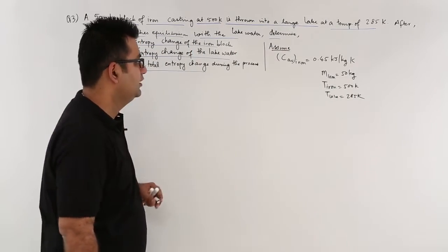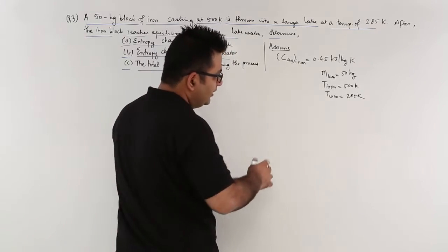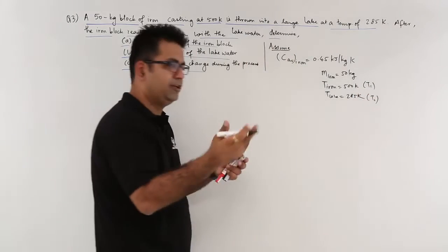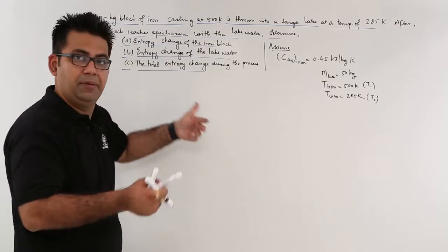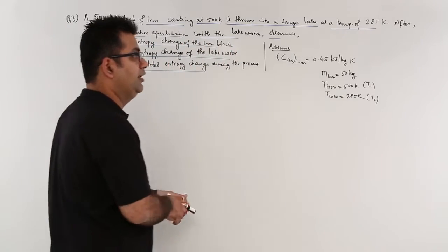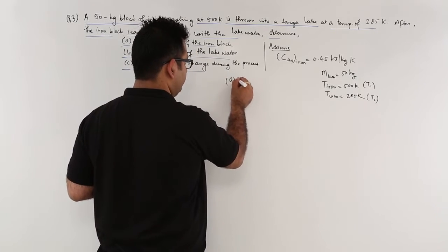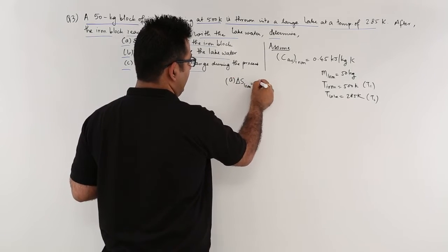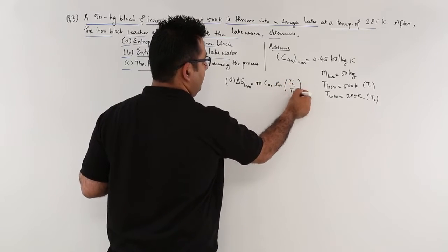The first thing to find is delta S for iron. We can call 500 Kelvin T1 and 285 Kelvin T2 with respect to iron, because ultimately the iron is reaching equilibrium with the lake. The formula for delta S for iron is M into C_av into natural log of T2 by T1.